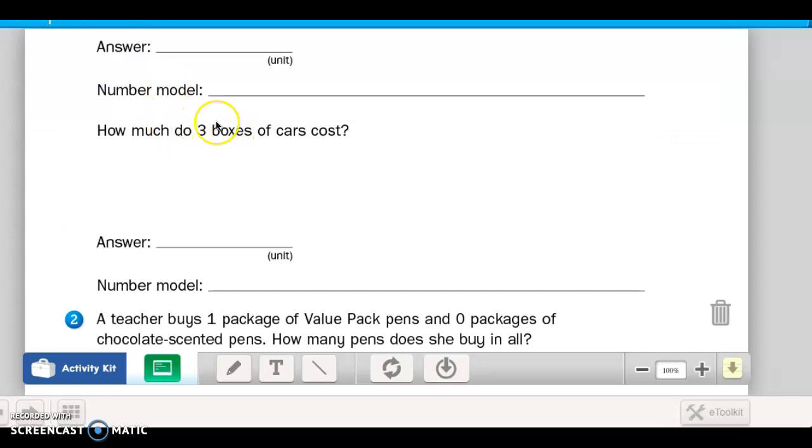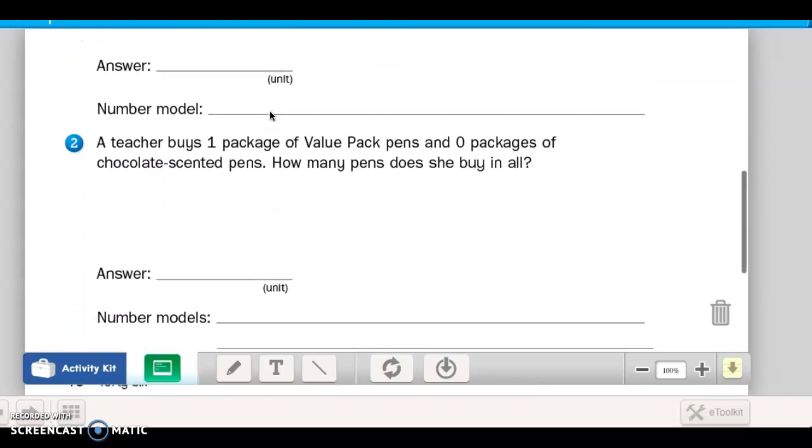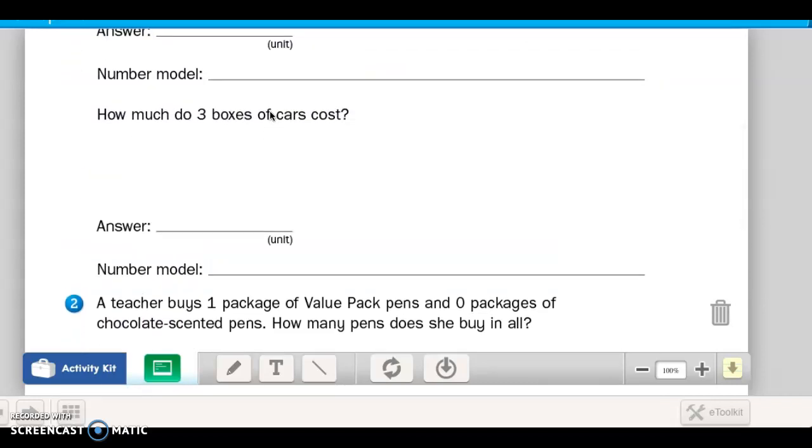I'm not sure why it skipped the middle question here. If you're working on your journal, this is what you should see. You should see that first question. Then we did the second question and for some reason my slides skipped the middle question, so I'm going to go back to this. How much do three boxes of cars cost?